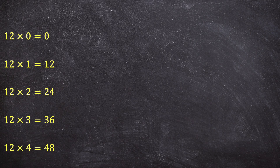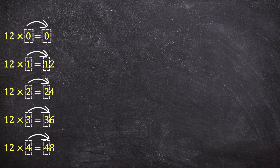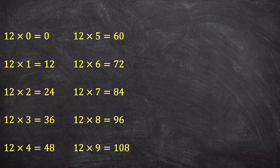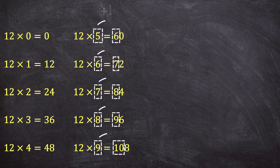Let's start by looking at the first 5 multiples of 12. Do you notice the connection between the factor being multiplied by 12 and the amount of tens in the product? They are equal. But when we look at the next 5 multiples of 12, the amount of tens in the product is 1 more than the factor being multiplied by 12.